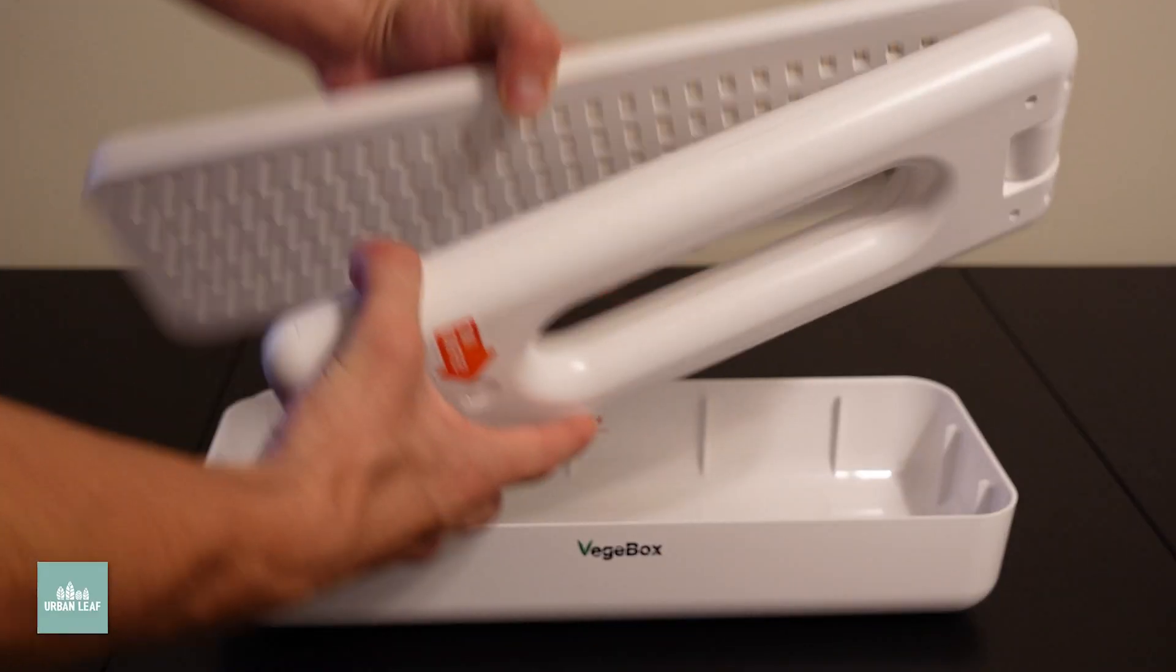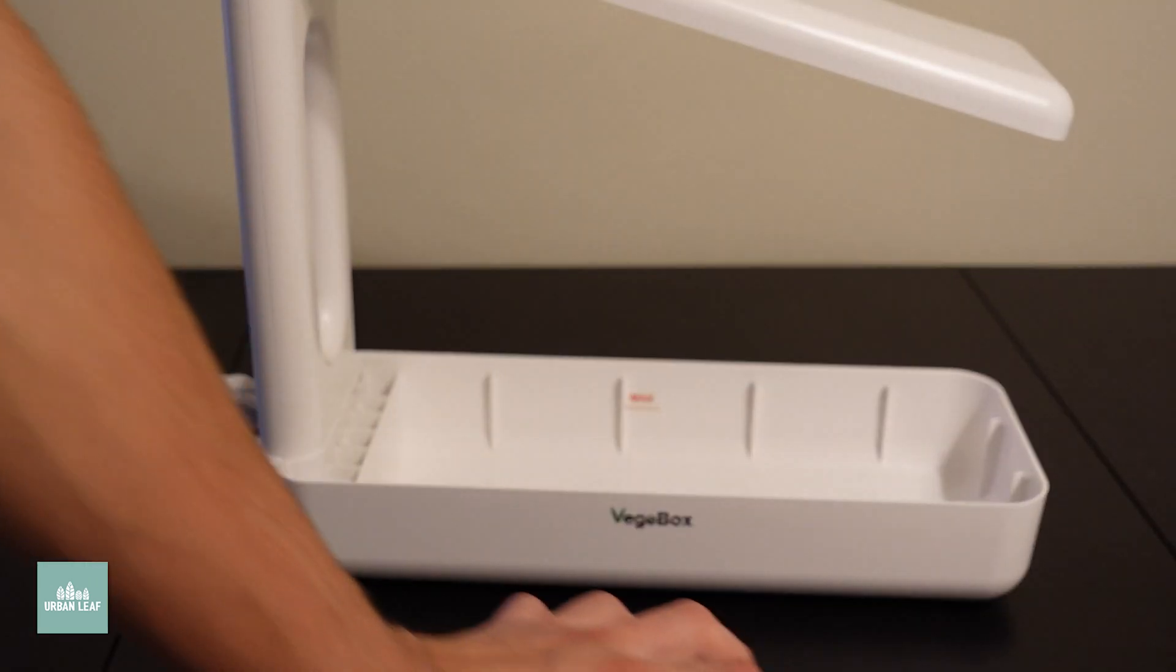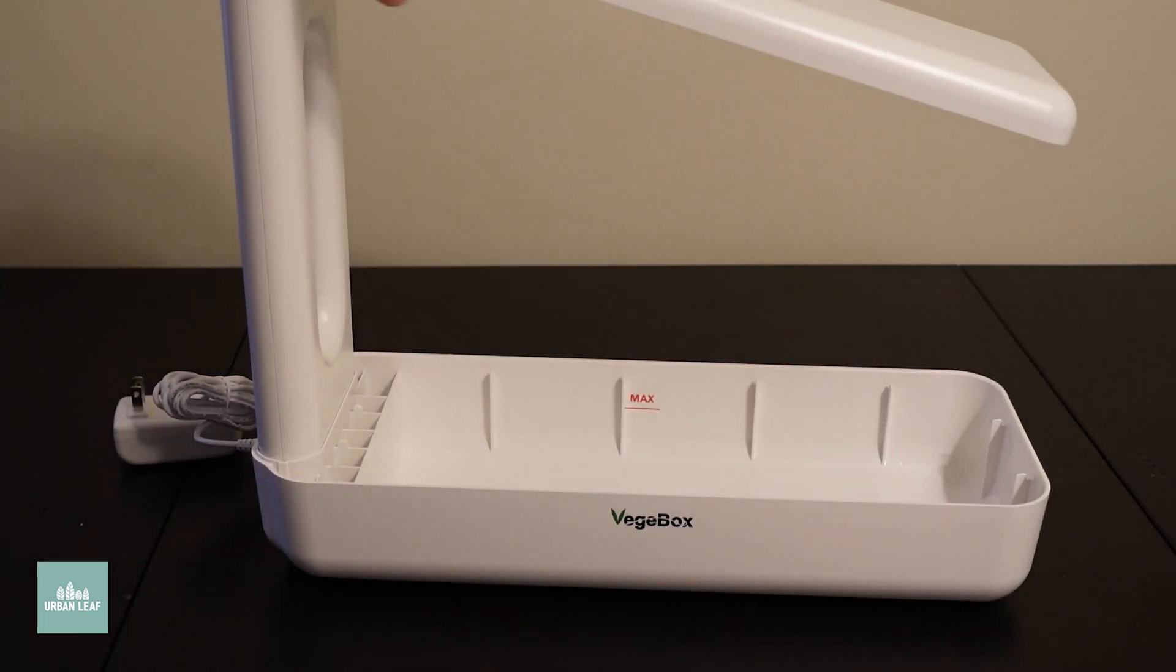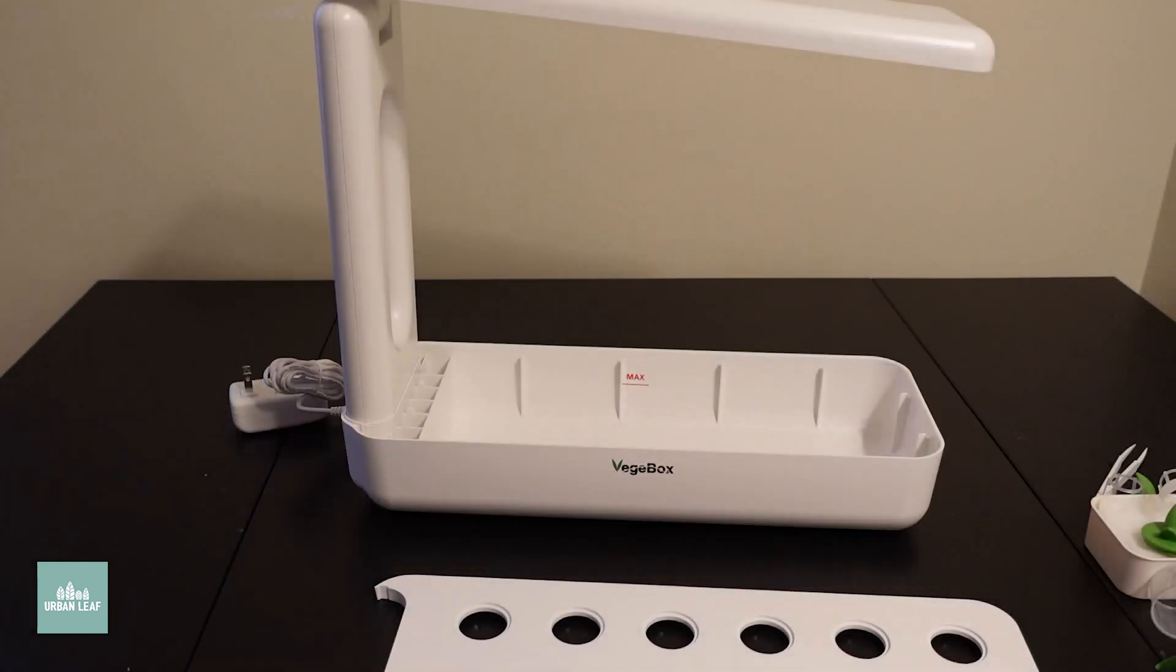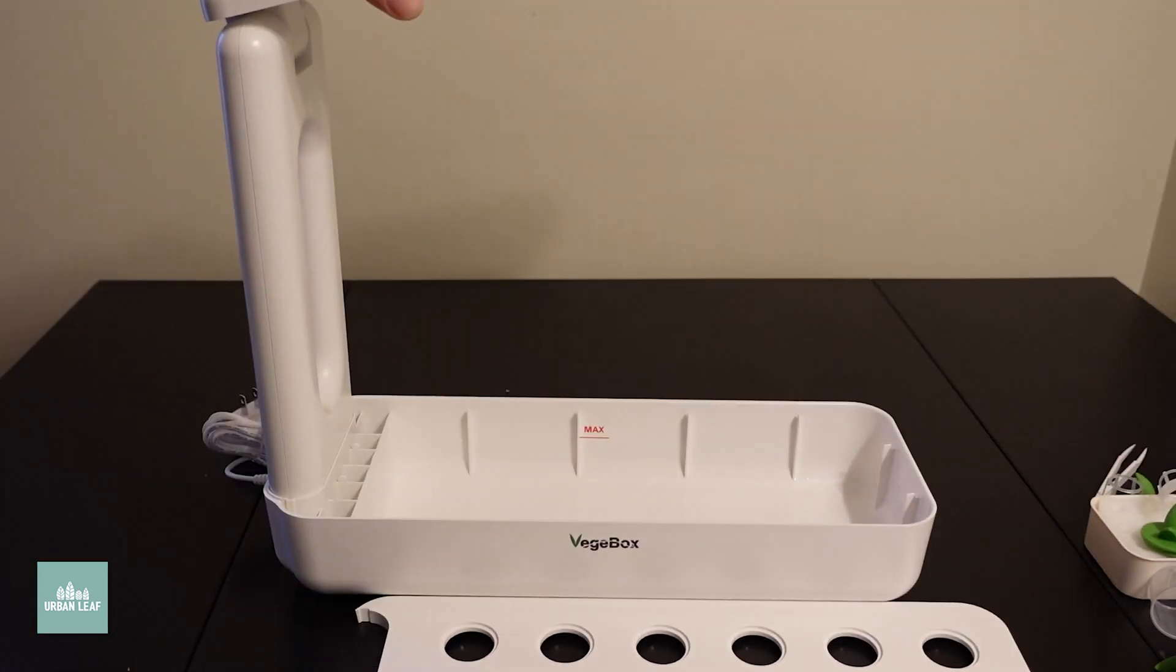So, assembly is going to be fairly straightforward with this unit. There is no water circulation system, so you're not getting fresh oxygen to your plant roots, which increases their likelihood of root rot. It's not going to be too big of an issue if you're just starting off and you're just experimenting with these sorts of units.